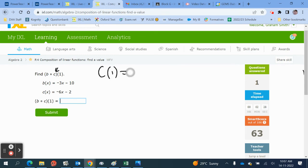So, c is minus 6x. We put a bracket wherever we have an x. And then we insert into the function 1. This is going to give us minus 6, minus 2, minus 8.